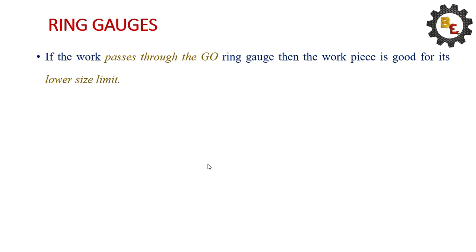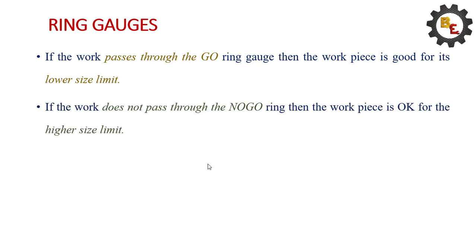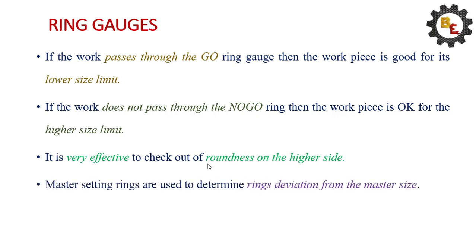If the work passes through the go ring, then the workpiece is good for its lower limit size. If the work does not pass through the no-go ring, the workpiece is okay for the higher limit size. It's very effective to check out of roundness on the higher side. Master setting rings are used to determine the ring's deviation from the master size.